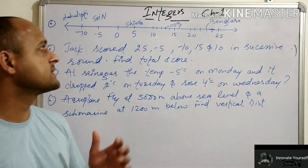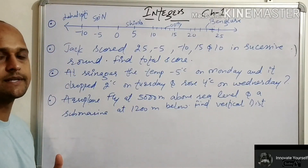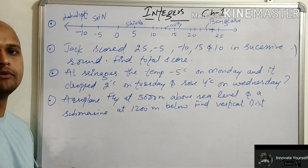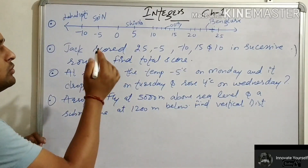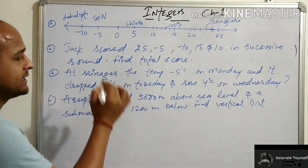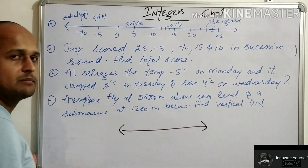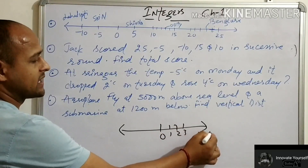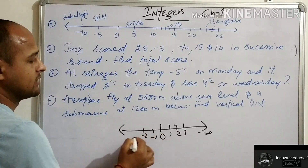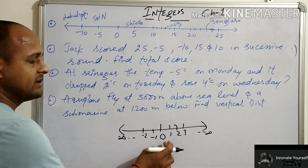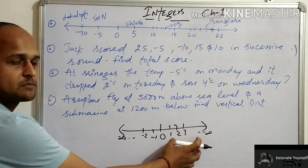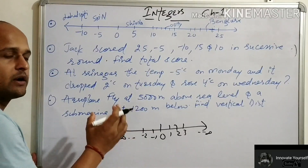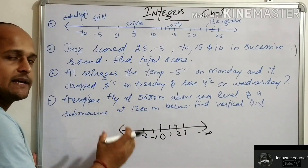Hello everyone, today we are discussing integers, Chapter 1 of Class 7. A conceptual video regarding integers has already been made — I will provide the link in the description. Integers are basically the counting numbers represented on a number line — positive, negative, including zero. Decimals and fractions are not integers.